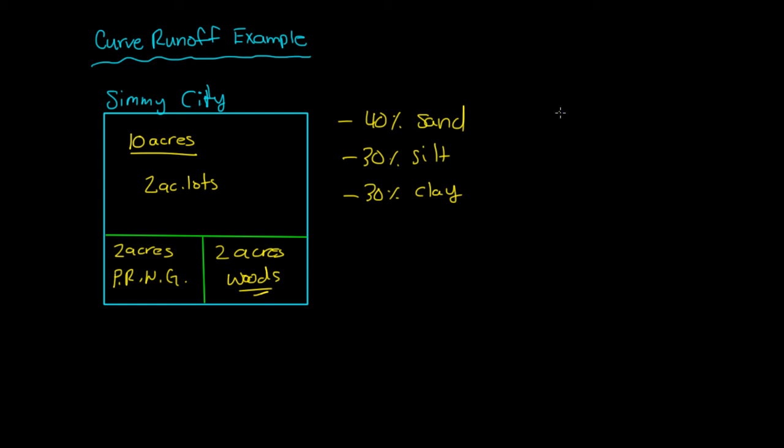Now when we need to calculate our curve runoff number, remember our equation was curve runoff for the city is the sum of the curve number i times its area over the total area. We can actually calculate total area right now. Area total is 10 acres plus 2 acres plus 2 acres, that's 14 acres.